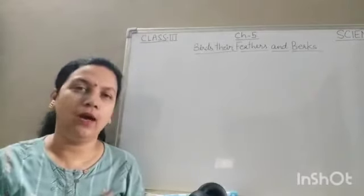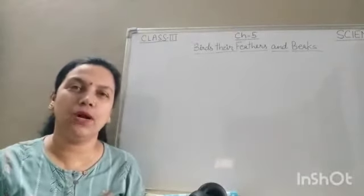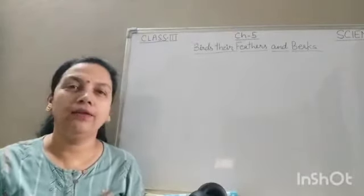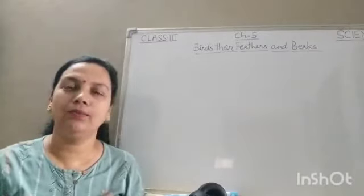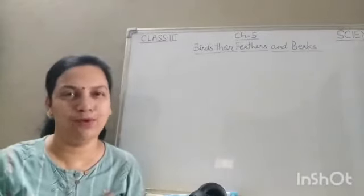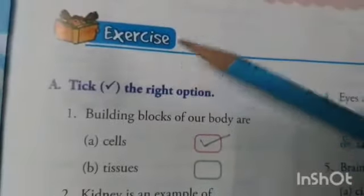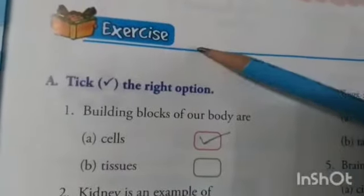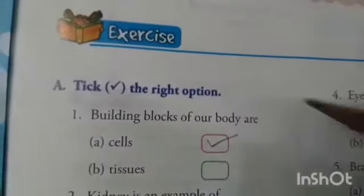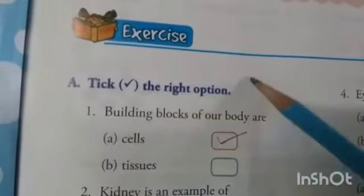Now you all know what you have to do. You have to match your answers with my answers, and if any correction is needed, you have to do that in your science book. So children, here is the exercise questions page number 25. Question number 8: tick the right options.